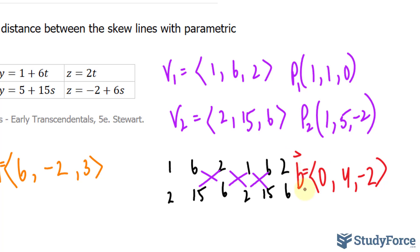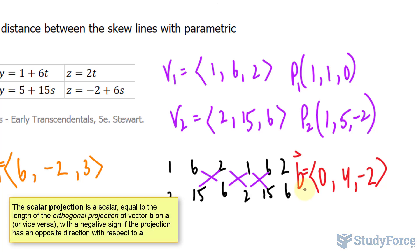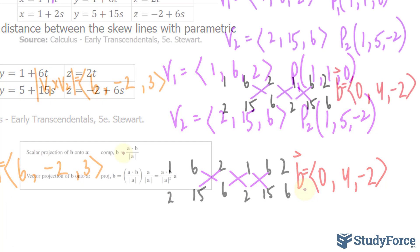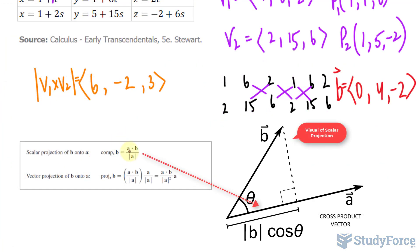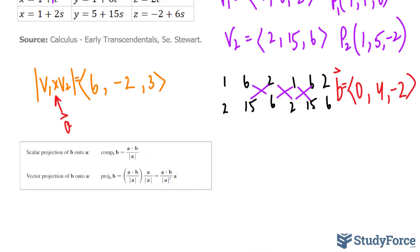Now it turns out that the distance between the skew lines is the absolute value of the scalar projection of the vector that we just found, B, along the cross product vector. And if you recall, the scalar projection had the formula shown on your screen right now, the dot product of A and B, where that's B and A is, let's say this, divided by the magnitude of A. So let's go ahead and do that.